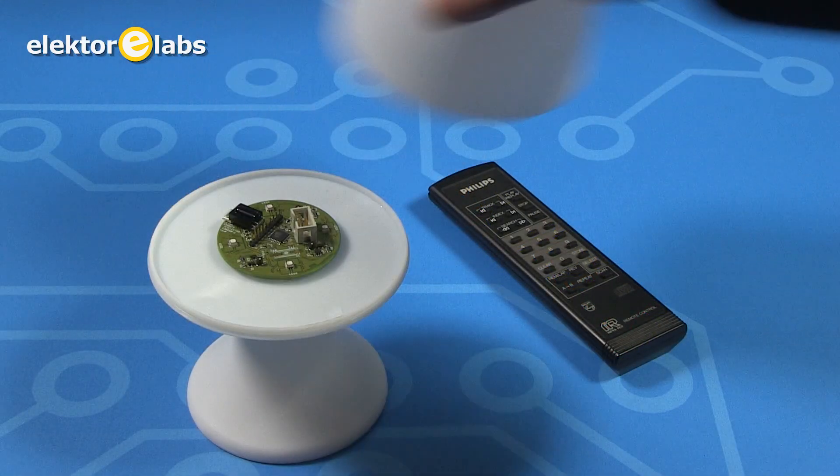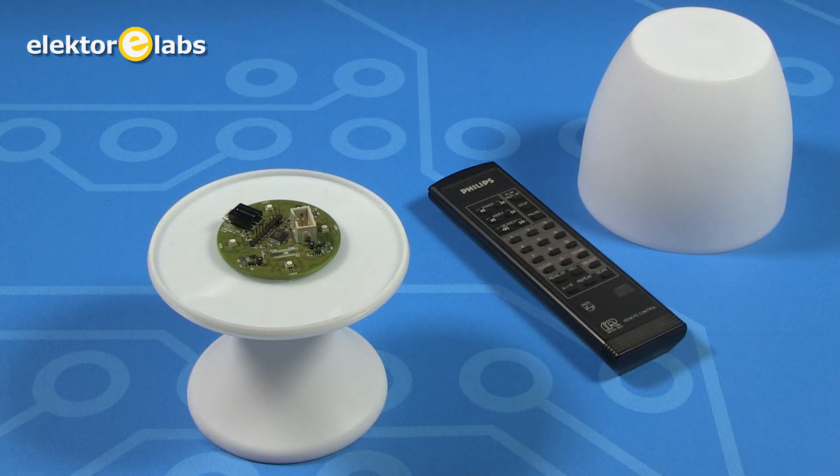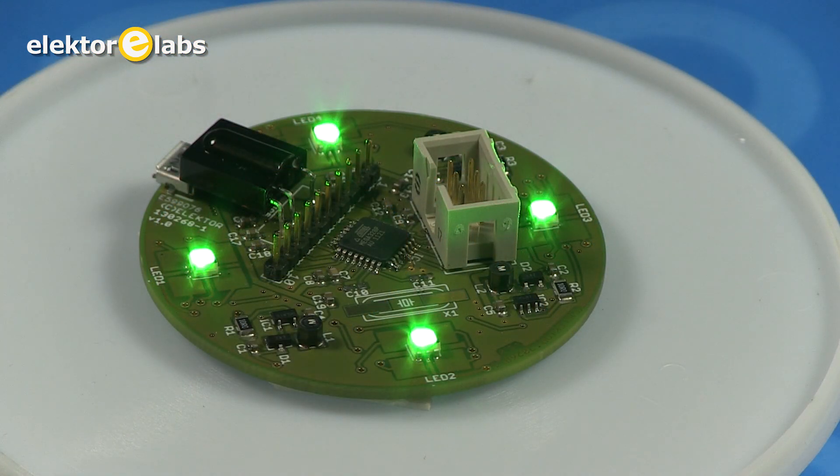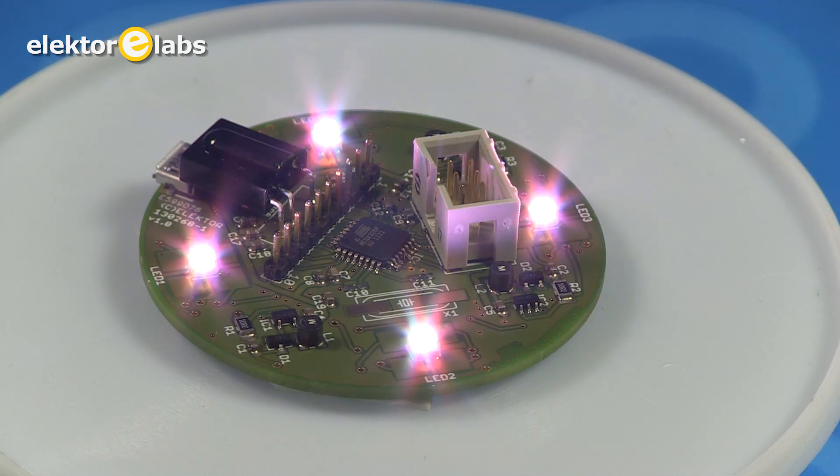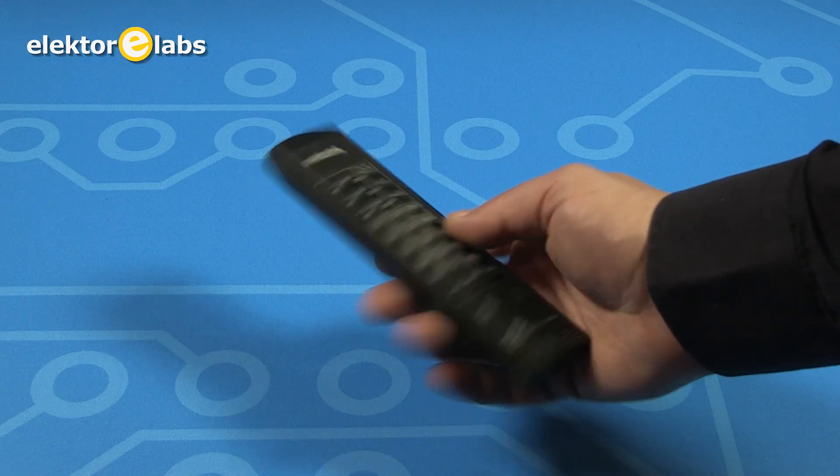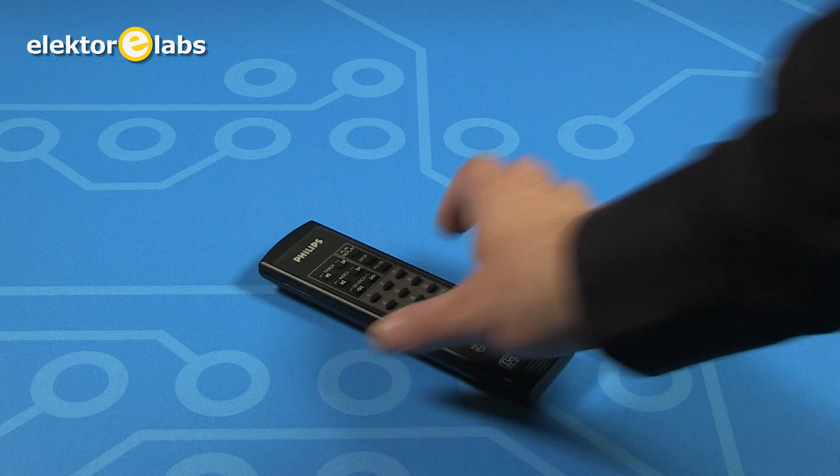The lighting unit consists of a 57mm diameter PCB fitted with four programmable RGB LEDs. To set the light color you don't need to fumble around with switches or controls on the unit. You can use a TV remote controller handset to give you just the right lighting effects.